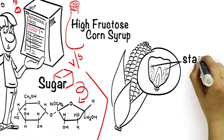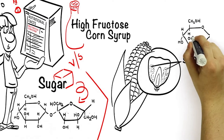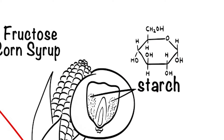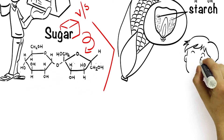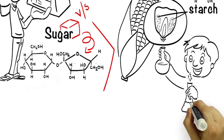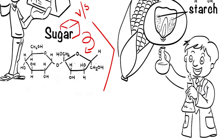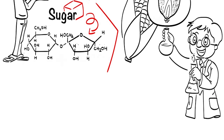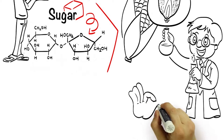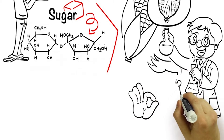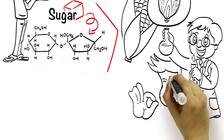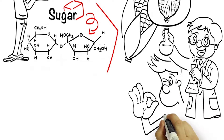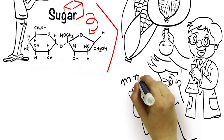The corn molecule has starch in it. Starch is glucose chains all linked together — no fructose. Scientists were able to take some of those glucose molecules and flip them into fructose. It's the same chemical structure; they're just slightly different in how they're linked together. And fructose is sweeter than glucose, so if you put glucose and fructose together you get a sweeter product than if you just have glucose.